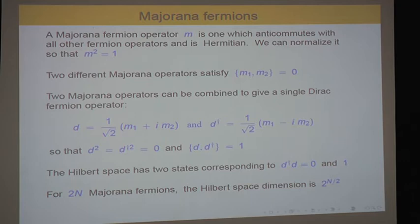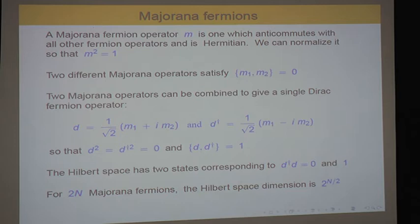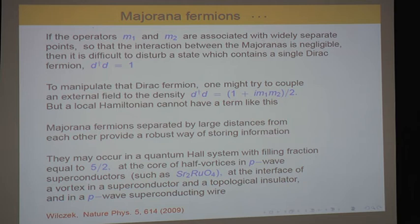Another example: four Majorana fermions would be the Dirac gamma matrices — they can be made Hermitian, their square is 1, and they all anticommute with each other.